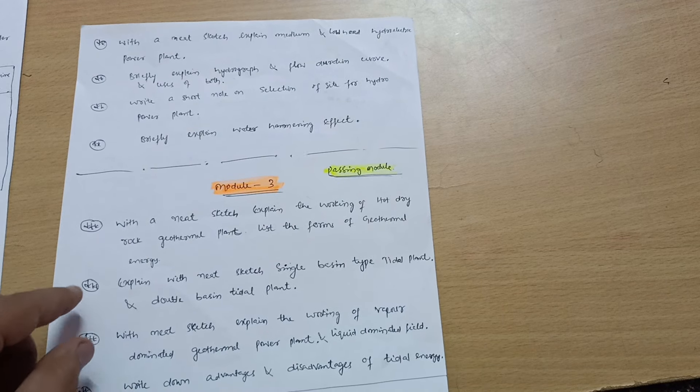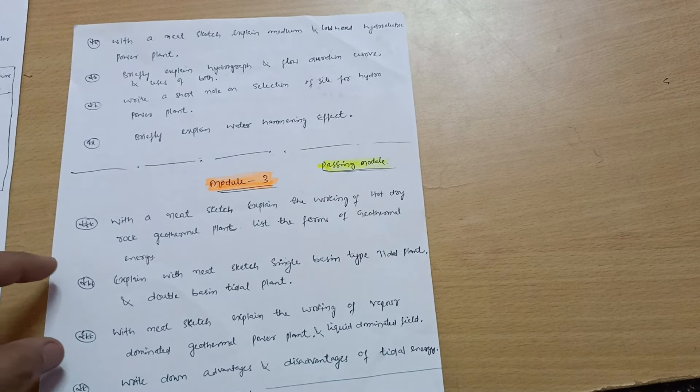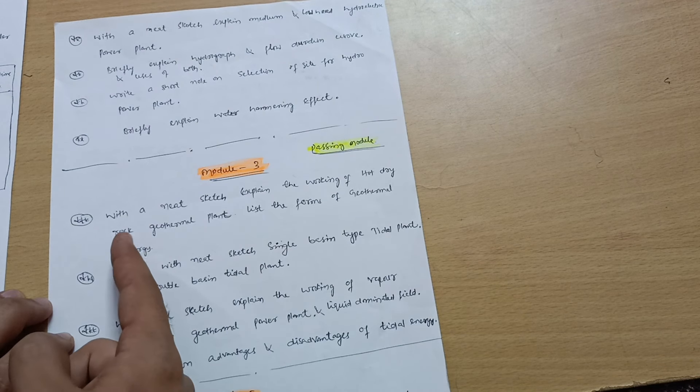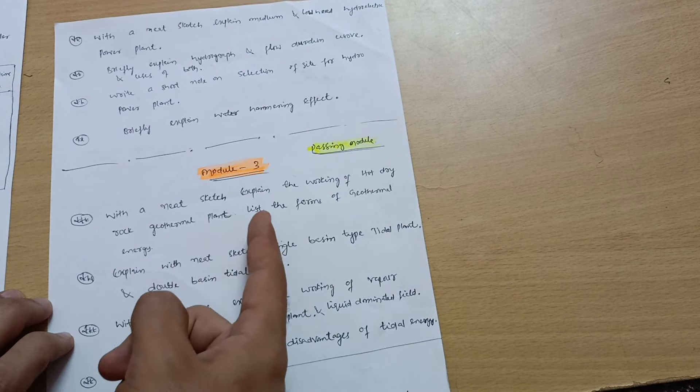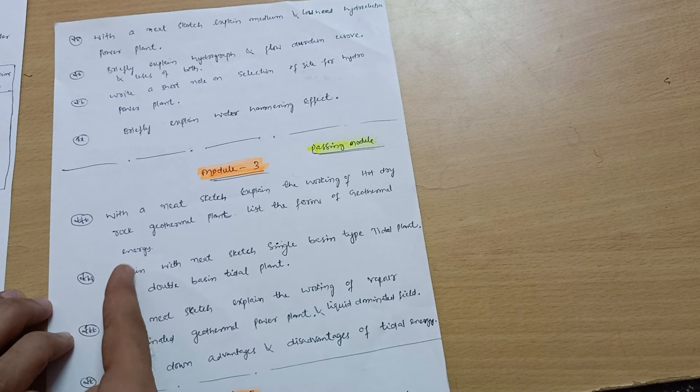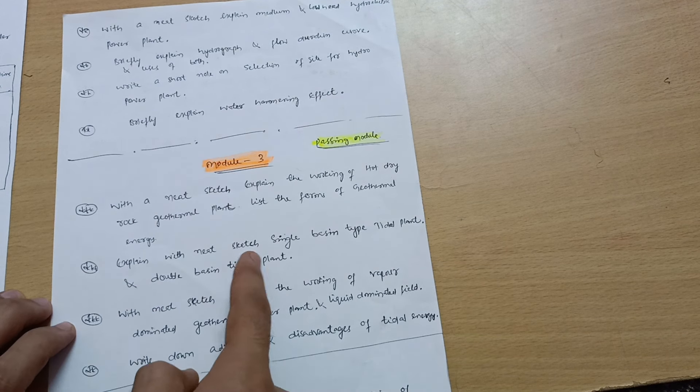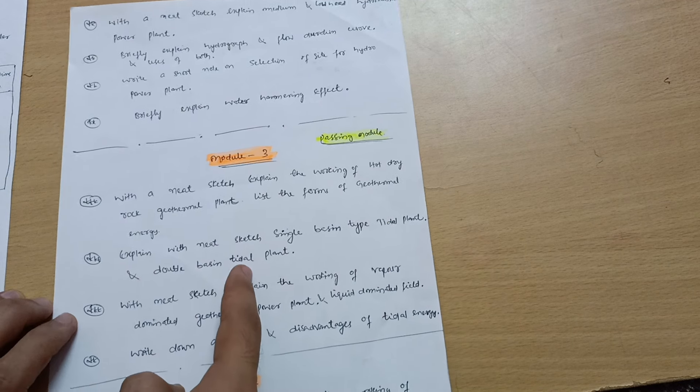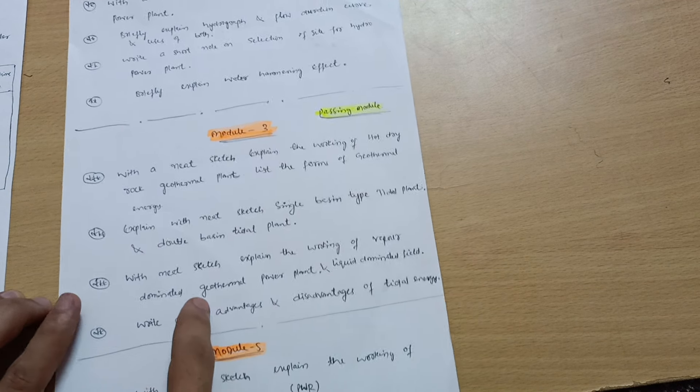Let me discuss the four important questions from here. With neat sketch explain the working of hot dry rock geothermal plant, list the forms of geothermal energy. Explain with neat sketch single basin type tidal plant and double basin tidal plant. Focus should be on diagrammatic part.